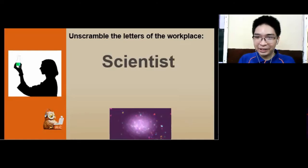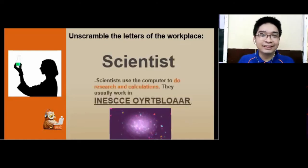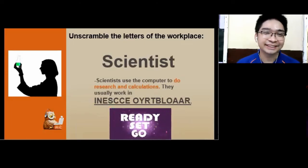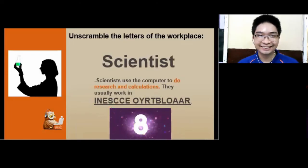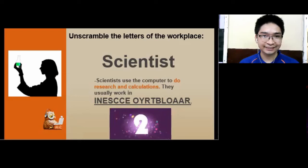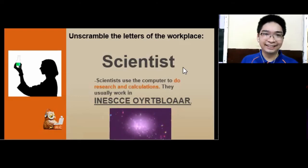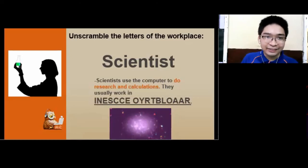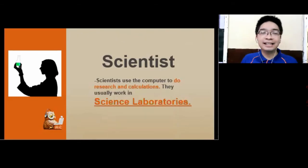Scientists are the ones who make experiments in order to discover new things. Scientists use the computer to do research and calculations. They usually work in... 10 seconds. Alright, so scientists usually work in science laboratories. I'm sorry, I think the letters given before are not accurate, especially for this. That's only laboratory, but they usually work in science laboratories.